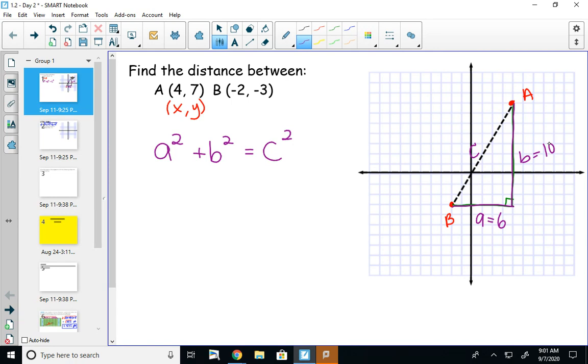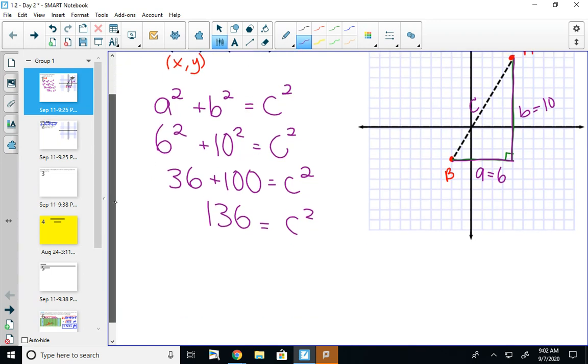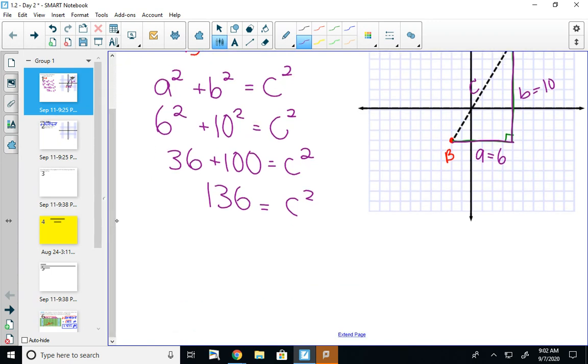So then we'll go back over to our equation, and we'll plug in those values. So A is 6, B is 10, C is what we're trying to find. 6 squared is 36, 10 squared is 100. So C squared will be 136. I didn't want C squared, though. I just wanted C. So I'm going to take the square root of each side.